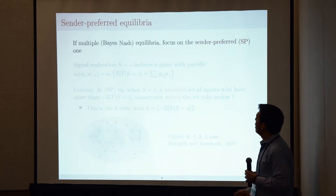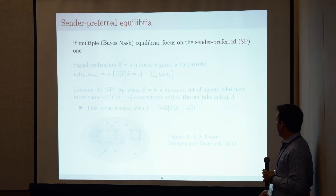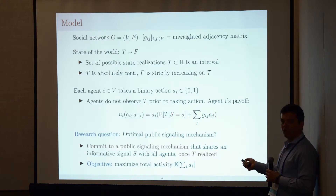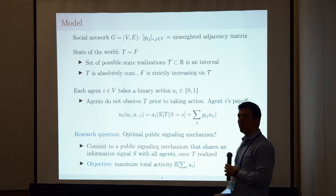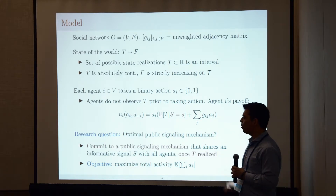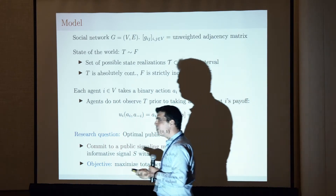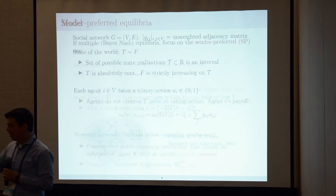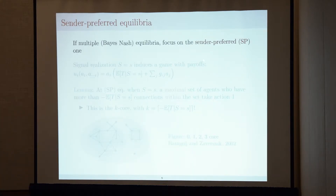The interaction among the agents given the information structure can be analyzed as the Bayes-Nash equilibrium of the corresponding game. The problem is there might be multiple equilibria; if that is the case, I break ties in favor of the equilibrium most beneficial to the information designer — in other words, I focus on the sender-preferred equilibrium. With slight tweaks of the model, the results generalize to the worst equilibrium as well.